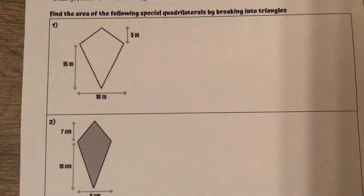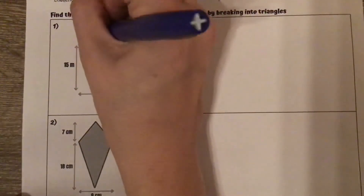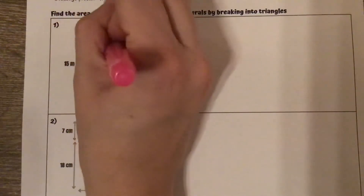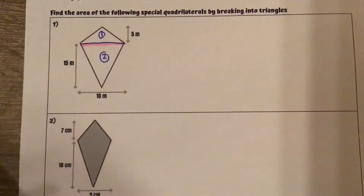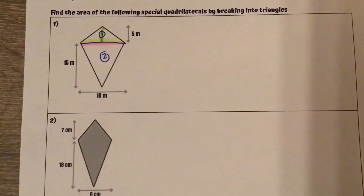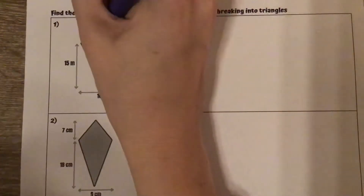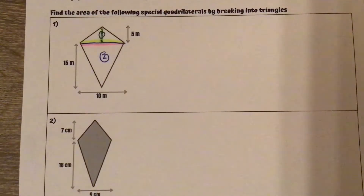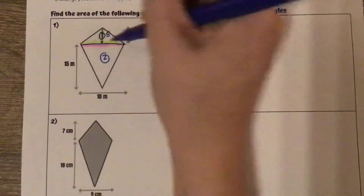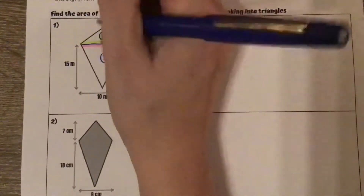For number 1, if I put a dividing line right here, we have triangle number 1 and triangle number 2. For triangle number 1, I have a base right here and then a perpendicular height right there. The perpendicular height given to us is 5, and our base, the length across, is 10.